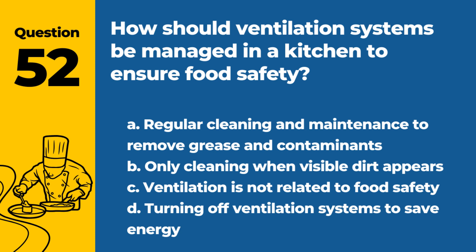Question 52. How should ventilation systems be managed in a kitchen to ensure food safety? A. Regular cleaning and maintenance to remove grease and contaminants. B. Only cleaning when visible dirt appears. C. Ventilation is not related to food safety. D. Turning off ventilation systems to save energy. Answer: A. Properly maintained ventilation systems are key to controlling air quality and removing contaminants.